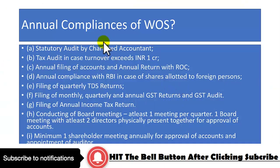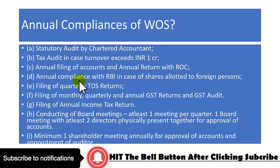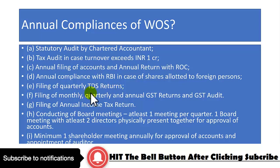What are the annual compliances of a wholly owned subsidiary? A statutory audit by a chartered accountant is required. A tax audit is required in case turnover exceeds one crore rupees. Annual filing of accounts and an annual return with the ROC must be done through a company secretary. Annual compliance with RBI is required in case shares are allotted to foreign persons, handled through RBI filing by a company secretary. Quarterly TDS returns and quarterly and annual GST returns must also be filed.